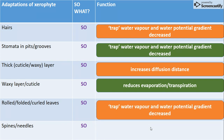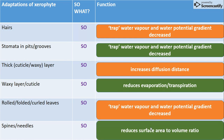Curved leaves trap water vapor and the water potential gradient is decreased. Spines and needles reduce the surface area to volume ratio. So all those adaptations of the plants are here to make sure that they prevent water loss through evaporation. As you can see, all of those answers are more or less the same, so the adaptations are not hard to remember.